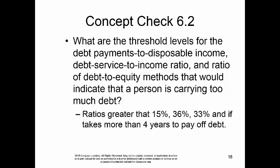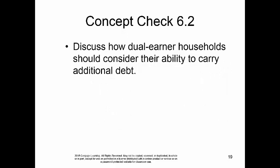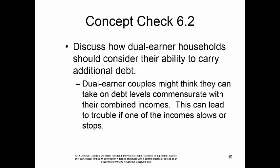Concept Check 6.2: What are the threshold levels for debt payments to disposable income, debt service to income ratio, or ratio of debt to equity that would indicate a person is carrying too much debt? Ratios of 15%, 36%, or 33%, respectively. If it takes more than 4 years to pay off your debt, you're relying on debt too heavily. Dual earner couples might think they can take on debt levels commensurate with their combined incomes, but this can lead to trouble if one income slows or stops — if a person's hours are cut or they are laid off, either situation could potentially cause a problem.